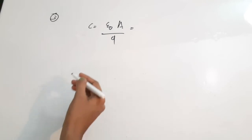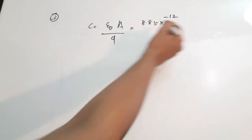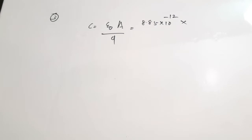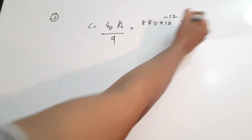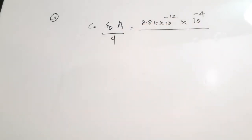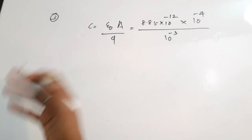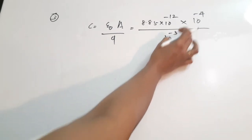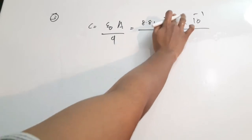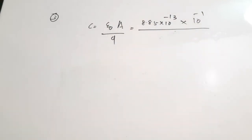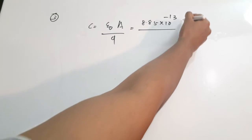C = ε₀ × A / D, where ε₀ = 8.85 × 10⁻¹² F/m (permittivity of free space), A = 10⁻⁴ m², and D = 10⁻³ m. Simplifying: 10⁻⁴ / 10⁻³ = 10⁻¹, giving C = 8.85 × 10⁻¹³ farads.